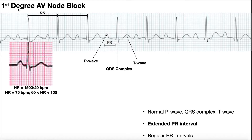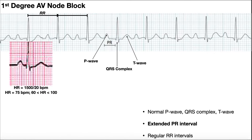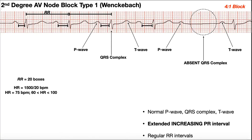With a first degree AV node block, you have that extended PR interval, but notice there are no QRS complexes that are absent — they're all there. The first degree AV node block looks like everything is normal and can often be mistaken for normal sinus rhythm, but the PR interval is extended. No QRS complexes are dropped — that's not the case in the second degree AV node block.